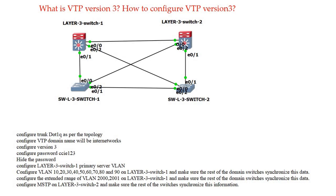We configure the version — which is version 3 — and the password, which is CCI123. After that we hide that password. We configure the primary server for VLAN on layer 3 switch 1, then configure VLANs 10, 20, 30, 40, 50, 60, 70, 80, and 90, and make sure the rest of the domain switches synchronize this information. After that we configure extended range VLANs 2000 to 2001 and also configure MSTP on layer 3 switch 2.